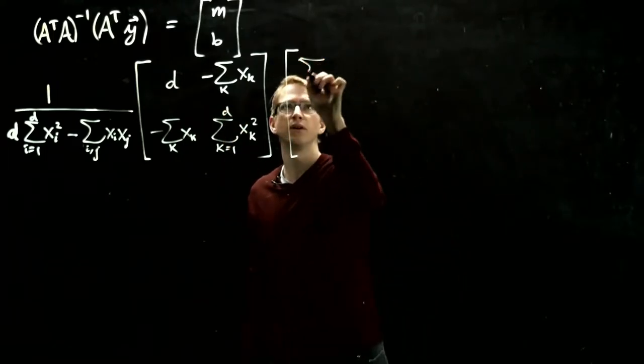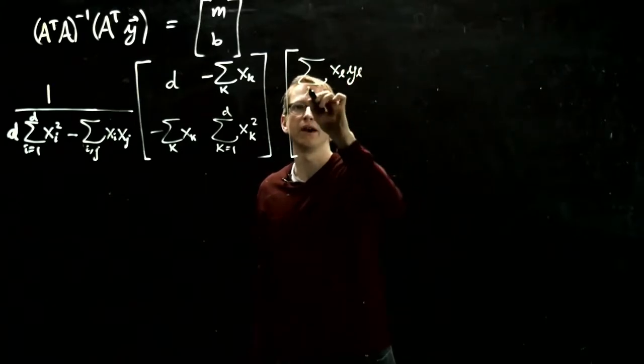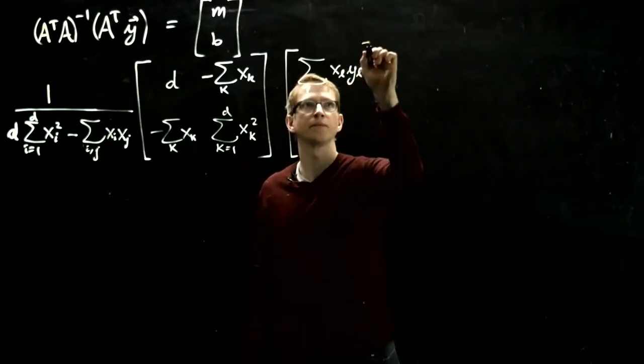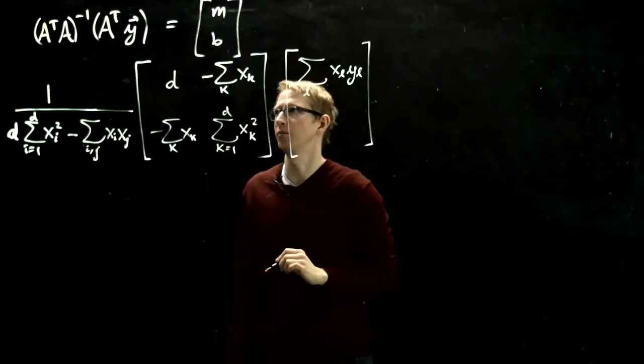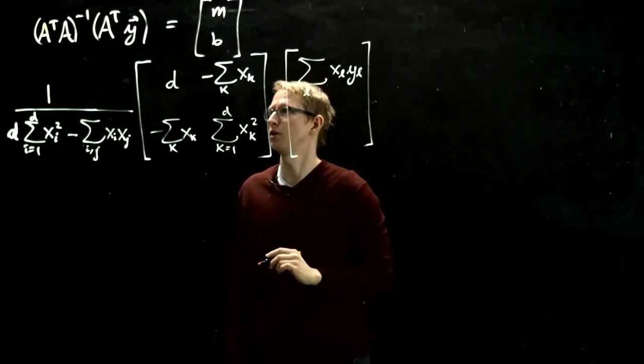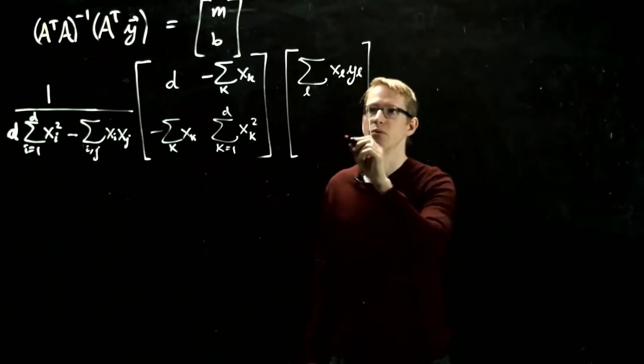So this was sum xl yl, l goes from 1 to d, and then on the bottom part of this two-component vector it was just the sum of the y's.